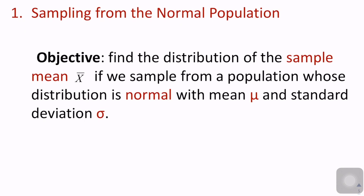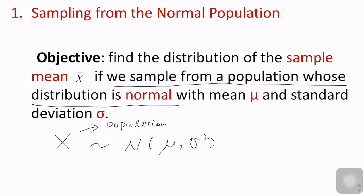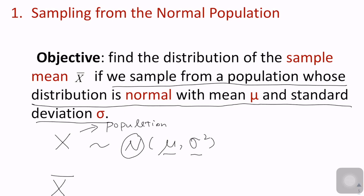Our objective is to find the distribution of the sample mean x-bar when we sample from a population whose distribution is normal with mean mu and standard deviation sigma. To find a specific distribution, we need to identify the name of the distribution and its parameters — specifically the expectation and variance.